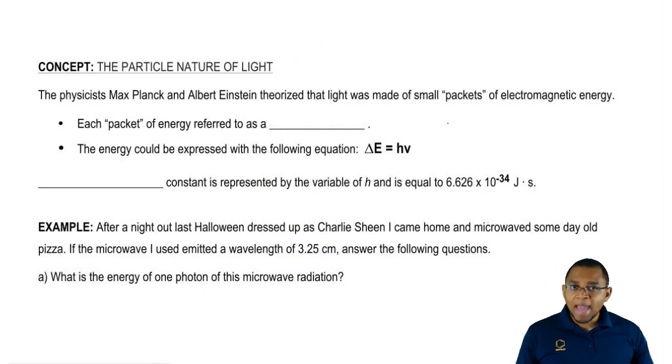First of all, we're going to say that the physicists Max Planck and Albert Einstein both theorized that light was made up of what they called small packets of energy.